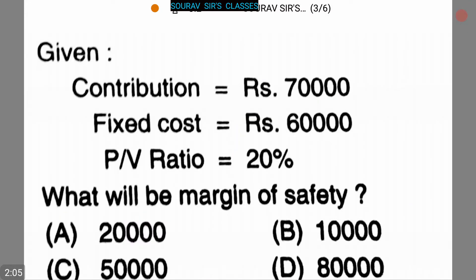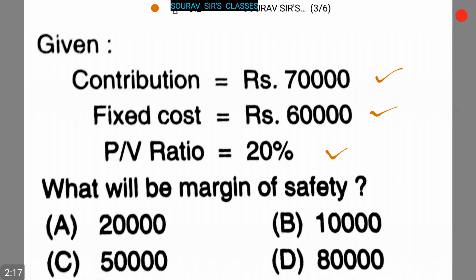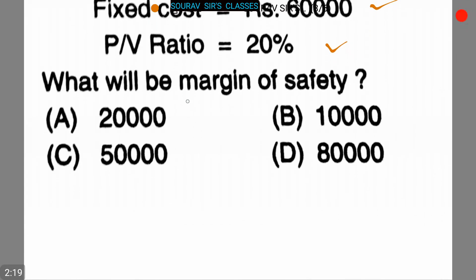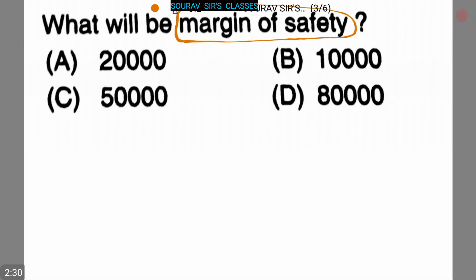In our next question, it is given that contribution is Rs. 70,000, fixed cost is Rs. 60,000, and PV ratio is given which is 20%. We have to find the value of margin of safety. Four options are given: Rs. 60,000, Rs. 10,000, Rs. 50,000, and Rs. 80,000. Now let's start.